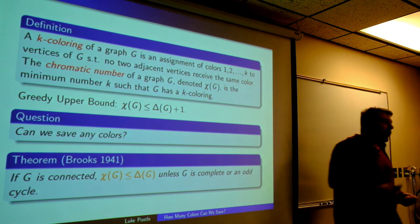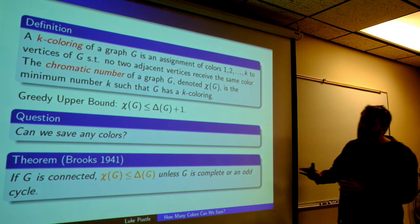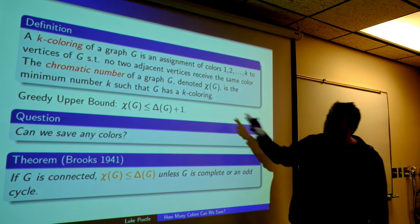Maybe this isn't how you've normally seen Brooks' theorem, but I want to pitch it as: Brooks' theorem is saying we can save one color. It's kind of the first result telling us we can save something unless these specific cases happen.